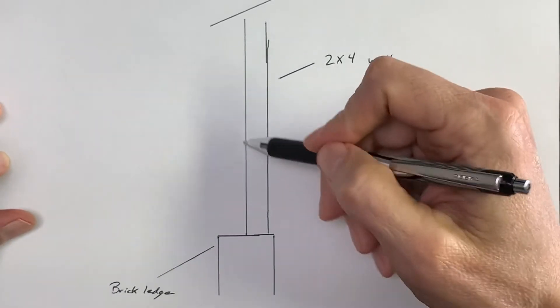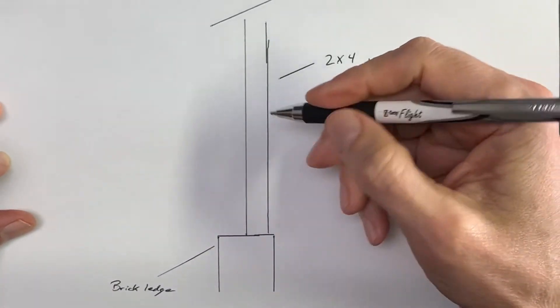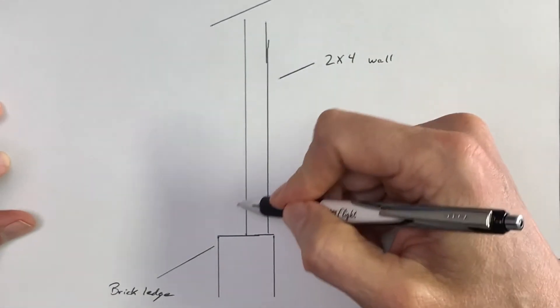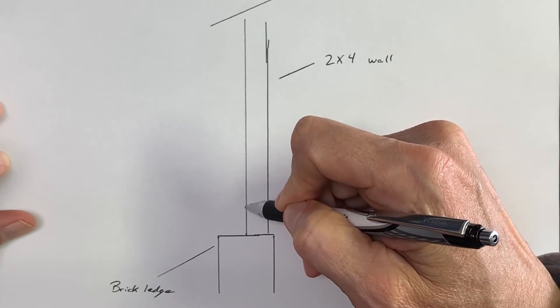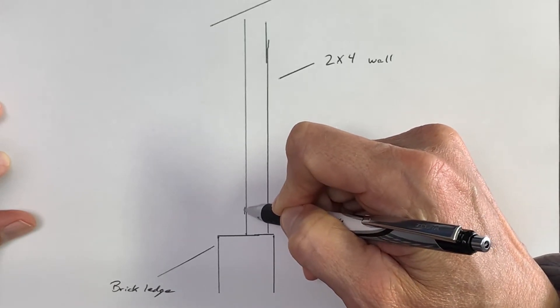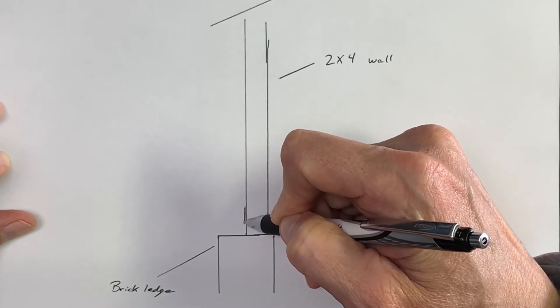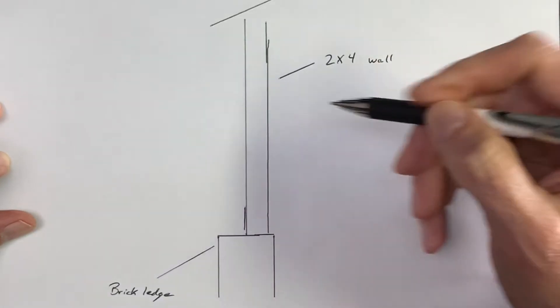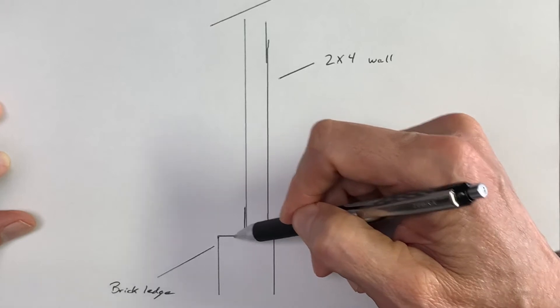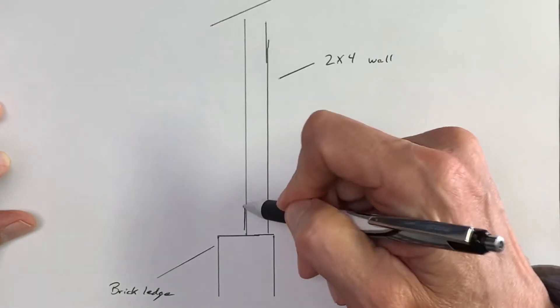Base flashing is a barrier, a vinyl barrier, that is about 16 inches wide, and it starts up on the studded wall here. And if you've seen some of my other videos, you've seen what a brick ledge is, we explain that.